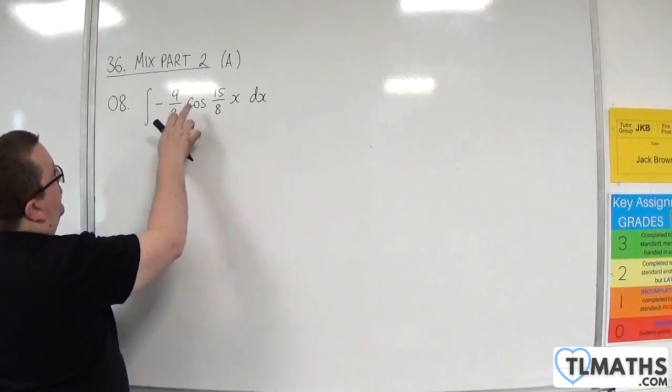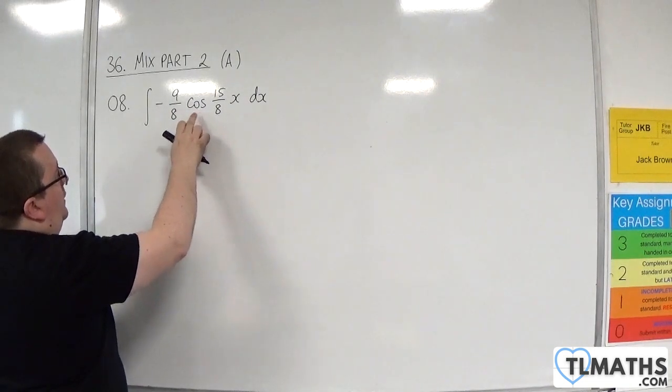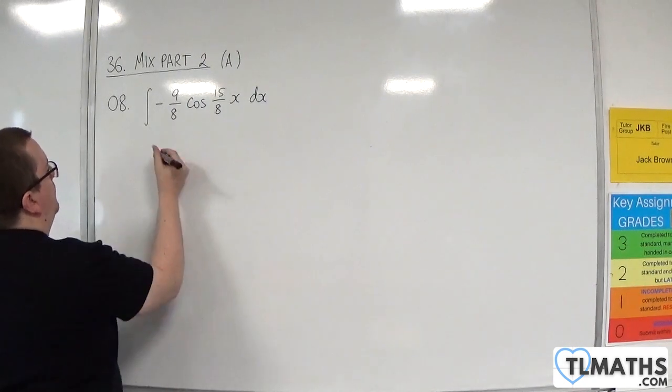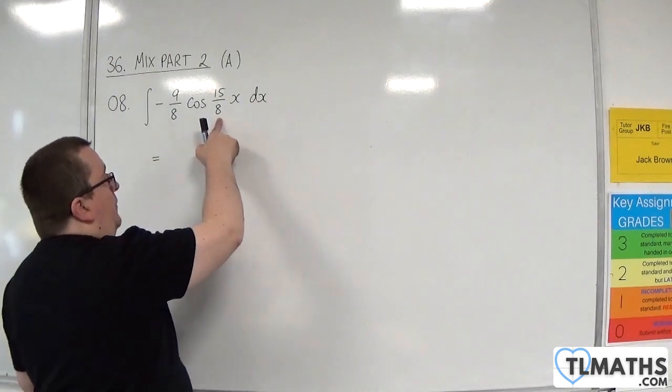Now we've got minus cosine, which we know is going to integrate to minus sine. So we've got the 15 eighths.